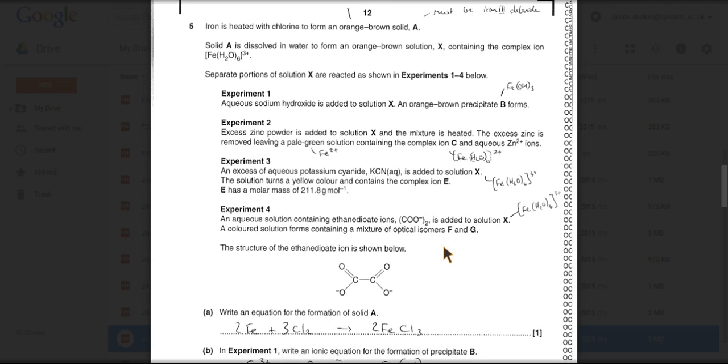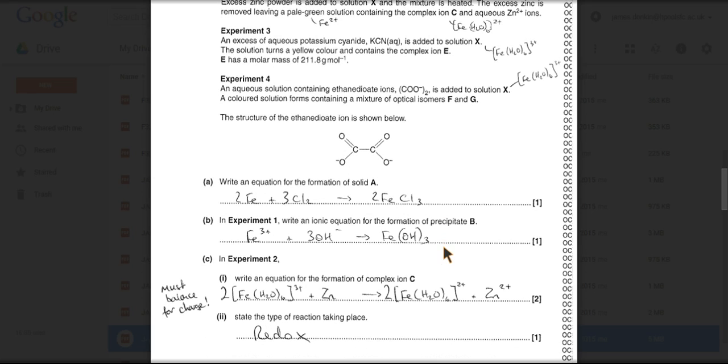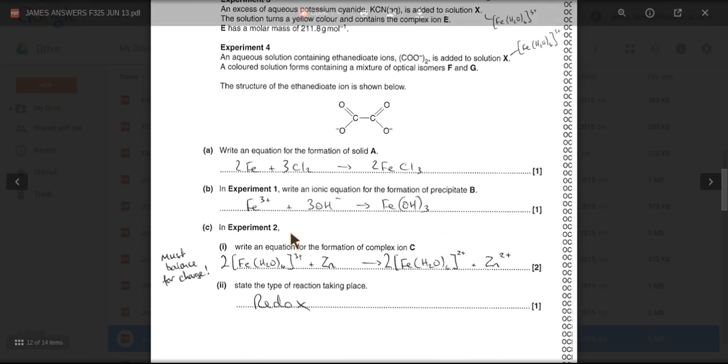And then a bit about reaction with the ethanedioate ion and we get a pair of optical isomers. Okay, so the equations - so the formation of solid A, iron and chlorine.